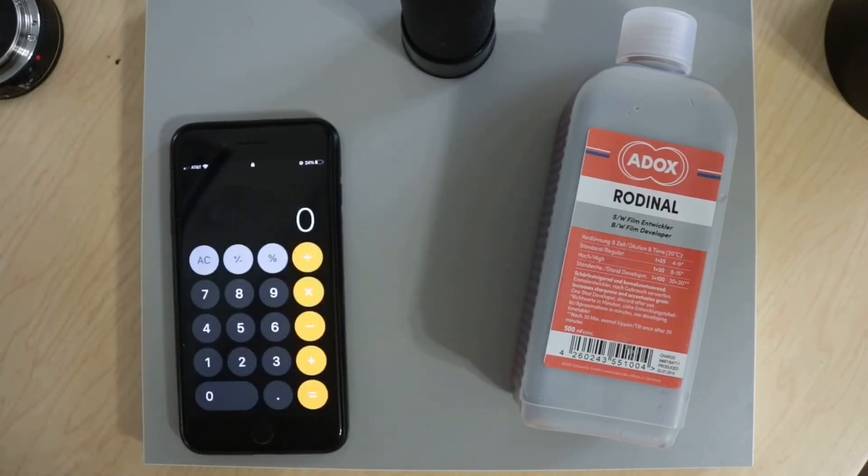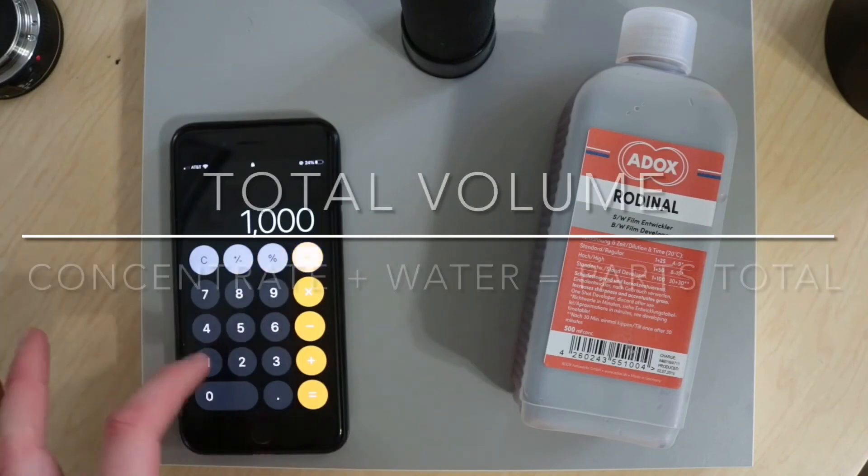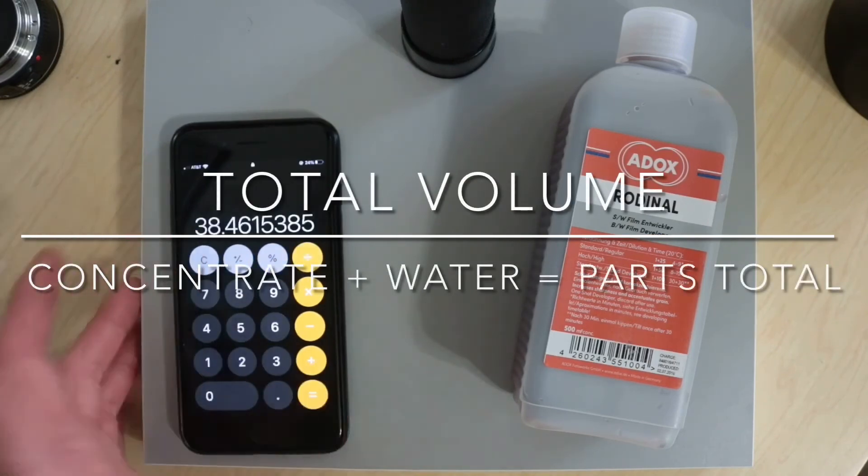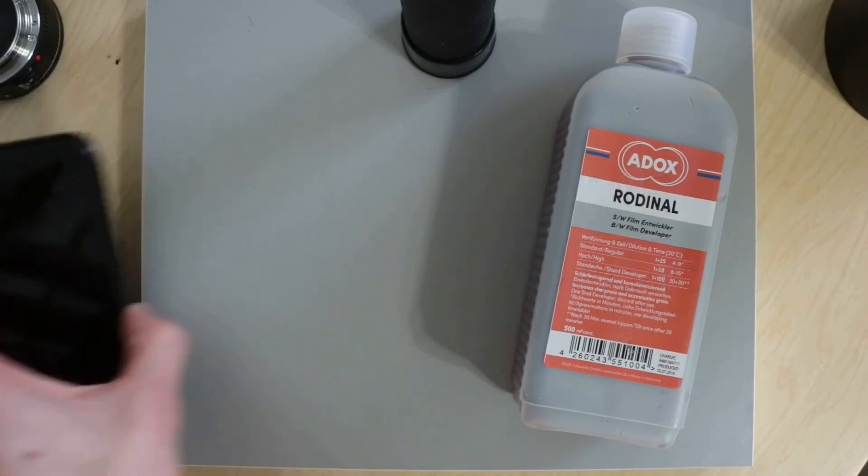Alright, and that's it. That's how you calculate your film developer dilutions. Super simple. And you could use that for any dilution, no matter what it is. You just get your parts concentrate plus your parts water, and that's going to be your total working parts. And you could apply that formula to any dilution.